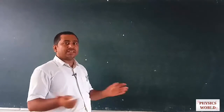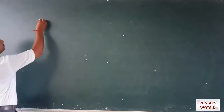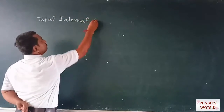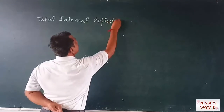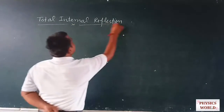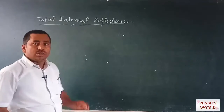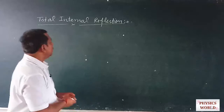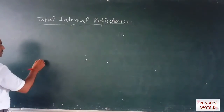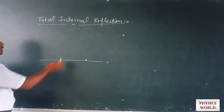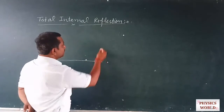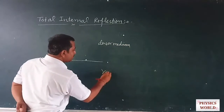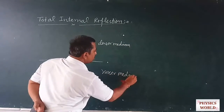Hello students, let us start our discussion about total internal reflection. Total internal reflection is a special type of reflection which occurs without any reflecting media. It occurs when any light ray is transmitted from a denser medium to a rarer medium.